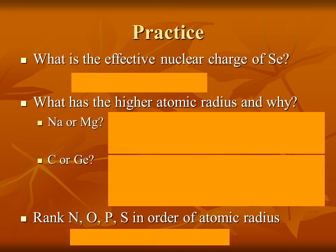Here are some practice problems on the principles you just learned. What is the effective nuclear charge of selenium? What has the higher atomic radius, and why — sodium or magnesium? Carbon or germanium? Finally, rank nitrogen, oxygen, phosphorus, and sulfur in order of atomic radius. Please pause the video now to work these problems out on your own. In five seconds I'll resume the video and we'll go over the solutions.